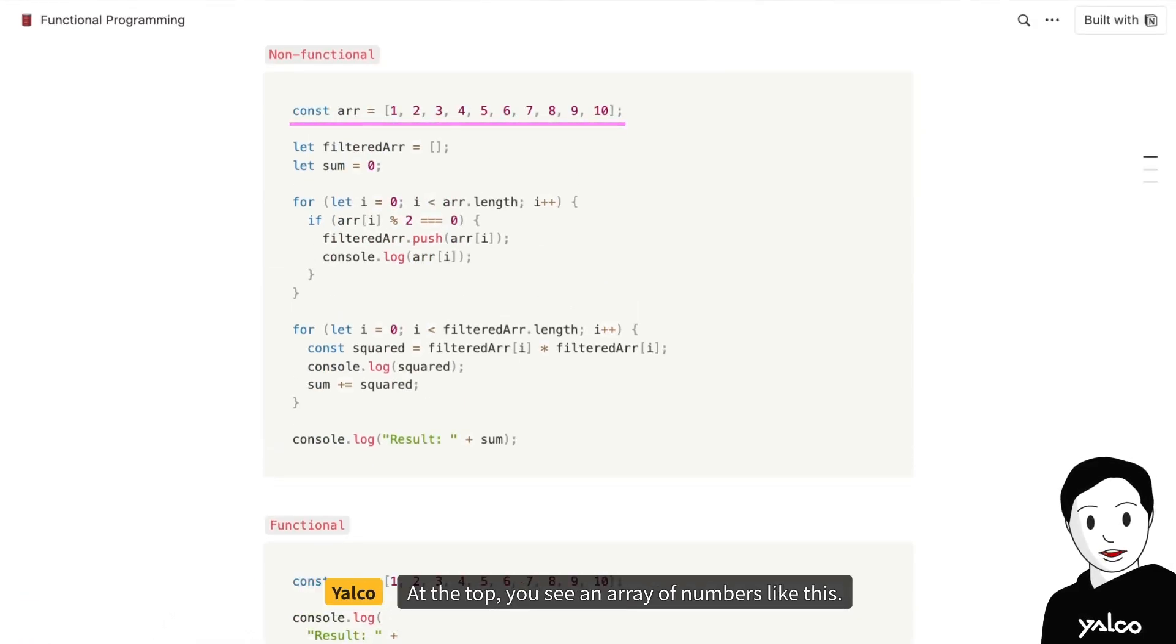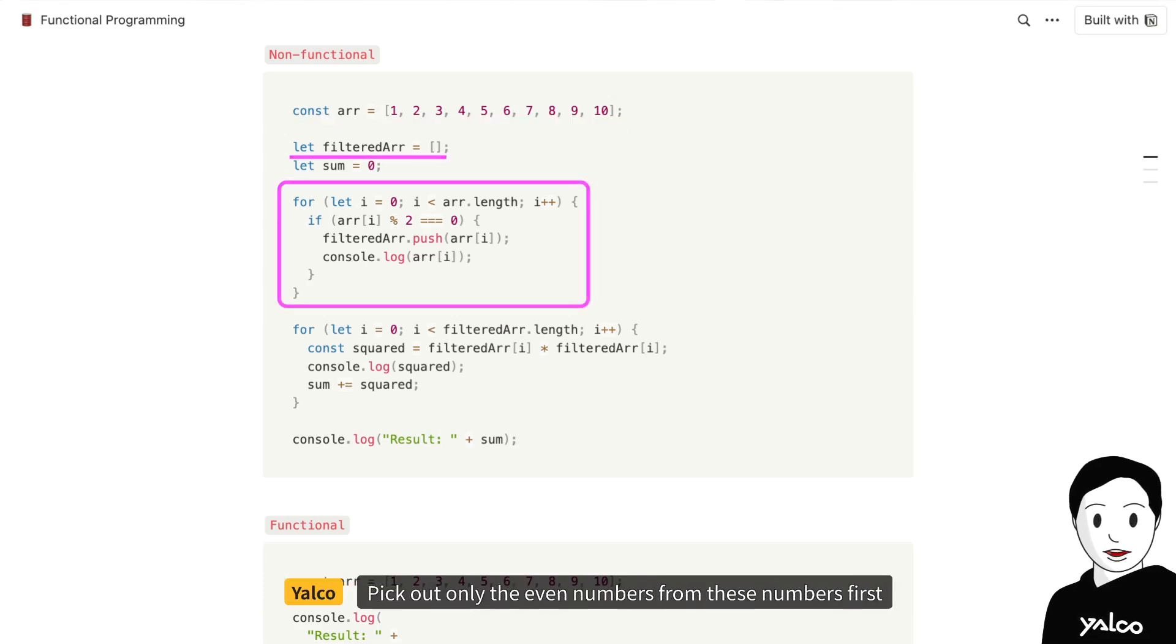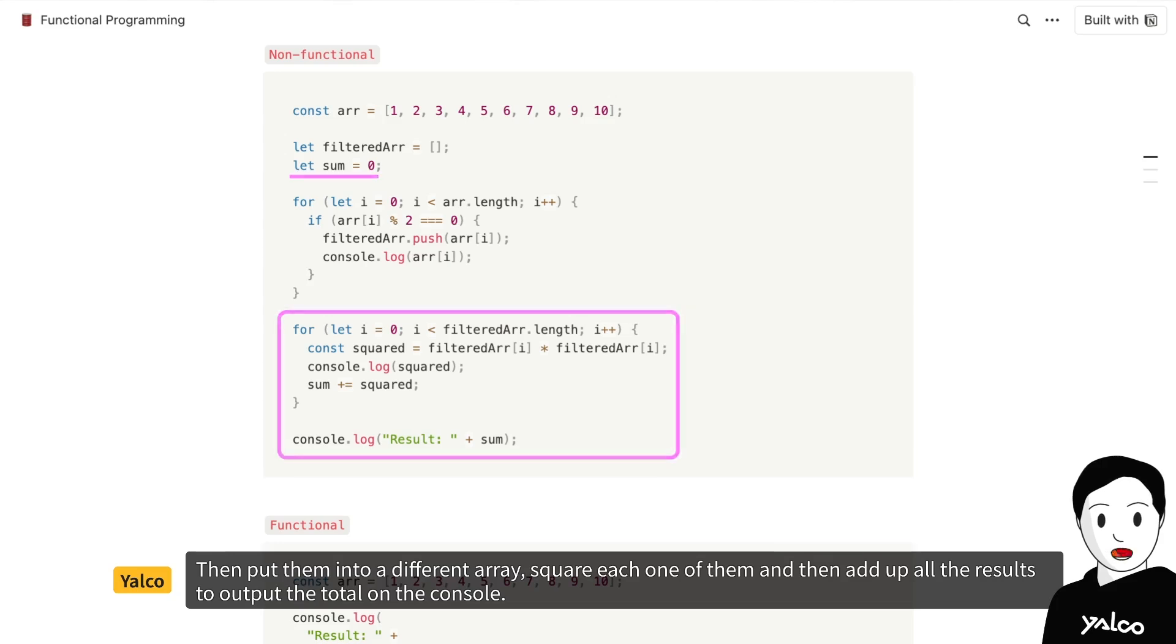At the top, you see an array of numbers like this. Pick out only the even numbers from these numbers first, then put them into a different array, square each one of them, and then add up all the results to output the total on the console.